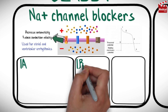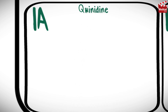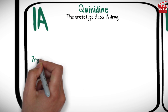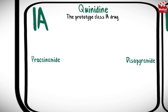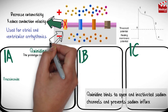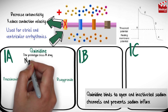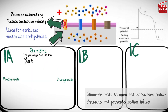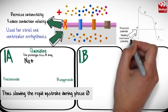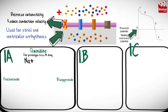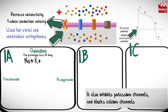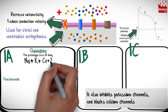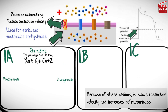Quinidine is the prototype drug of Class 1a; other agents include procainamide and disopyramide. Quinidine binds to open and inactivated sodium channels and prevents sodium influx, thus slowing the rapid upstroke during phase zero. It also inhibits potassium channels and blocks calcium channels.